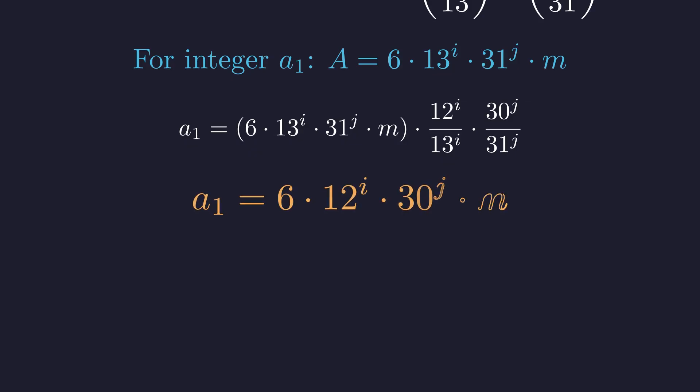A1 must be of the form 6 times 12^i times 30^j times m.